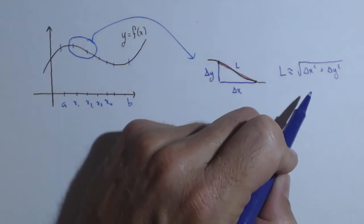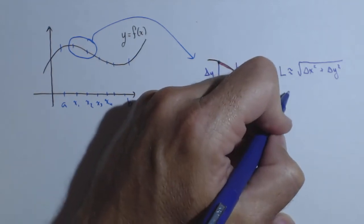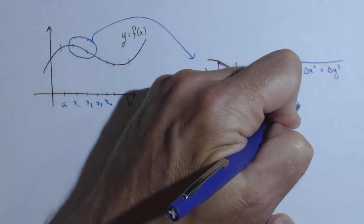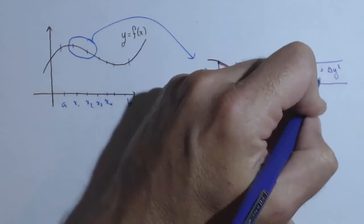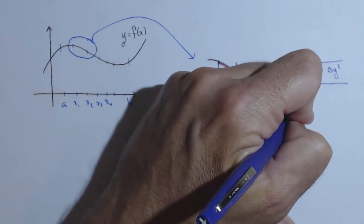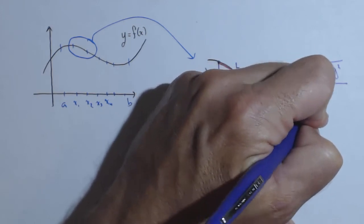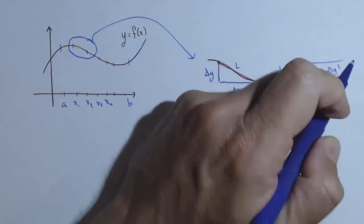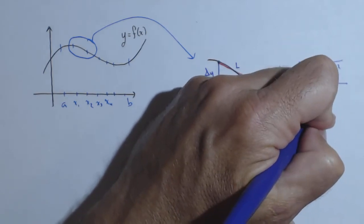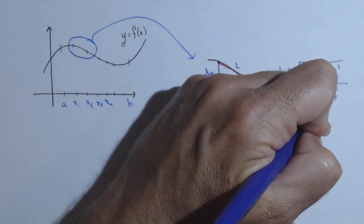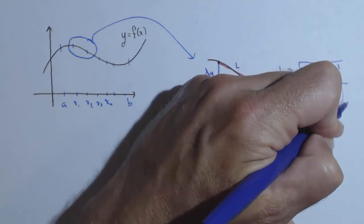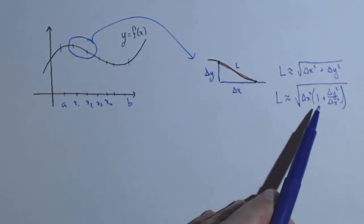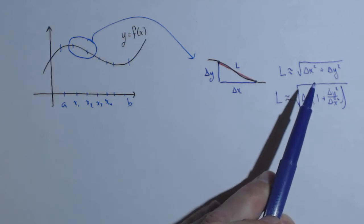Now, I'm going to do a little manipulating with this L. So L is approximately, I'm going to factor a delta x squared out of each term. So I get delta x squared times 1 plus, now this didn't have a delta x in it to begin with, so what I'm going to have to do is rewrite that as delta y squared over delta x squared. So what you can see is if I were to multiply this back through, I would get up to the line above.